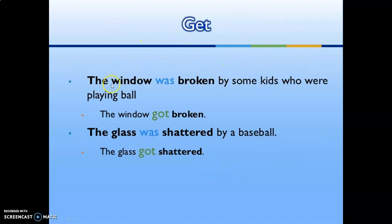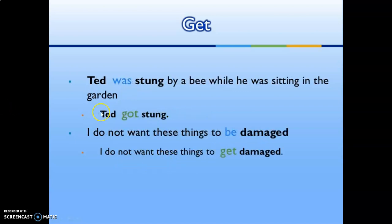Using 'get' in passive: 'The window was broken by some kids who were playing ball' → 'The window got broken.' 'The glass was shattered by a baseball' → 'The glass got shattered.' 'Ted was struck by a bee while he was sitting in the garden' → 'Ted got struck.' Also: 'I don't want these things to be damaged' → 'I don't want these things to get damaged.'